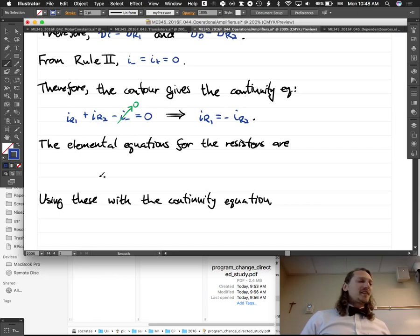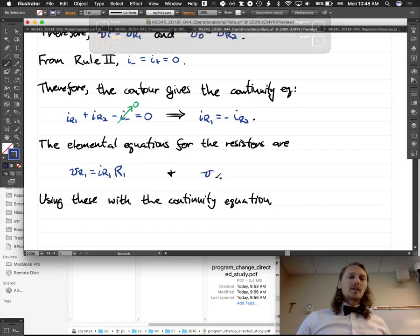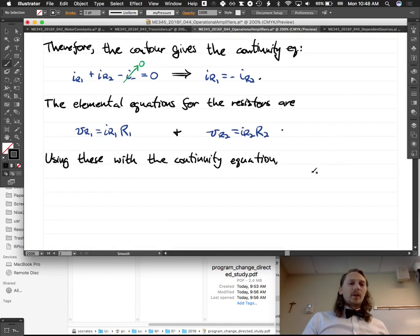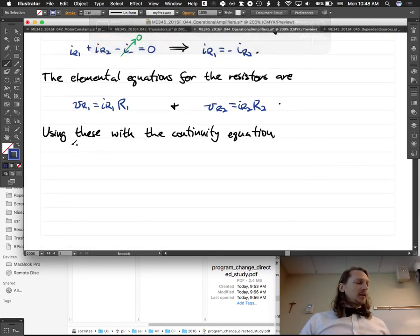So, the elemental equations for the resistors are V_R1 equals I_R1 times R1. Same old elemental equations that we know and love for resistors. V_R2 is I_R2 times R2. Now, using these with a continuity equation, we can make the following couple of statements. So, we know that I_R1 is equal to negative I_R2. If we use this as our starting equation and we plug in I_R1 from the elemental equation here and I_R2 from this elemental equation, we get that V_R1 over R1 equals negative V_R2 over R2.